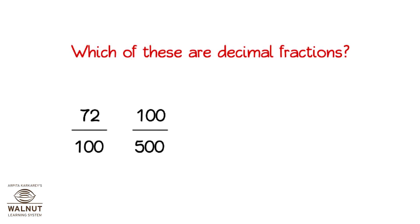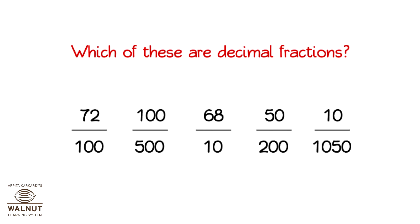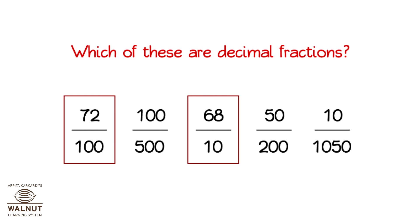Look at all these fractions. Which of these are decimal fractions? In decimal fractions, the denominator has to be either 10, 100, 1000, 10,000, or some such multiple of 10. Denominator 100 — decimal fraction. Denominator 500 — not a decimal fraction. Denominator 10 — decimal fraction. Denominator 200 — not a decimal fraction. Denominator 1050 — not a decimal fraction. So two fractions are decimal fractions.